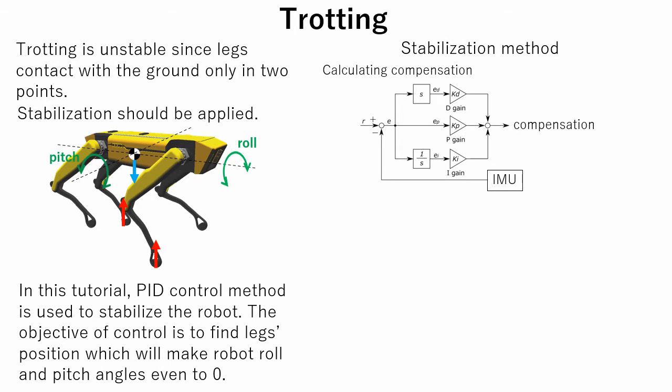This is how compensation is calculated. R stands for the objective values of pitch and roll, that is zero. E is the difference of the objective values in data obtained from the IMU. Since this is a discrete system, to calculate the differential part we divide the difference of the current and previous error values by current time step value. And to calculate the integration part, we add a product of current time step and current error value to the previous integration value.